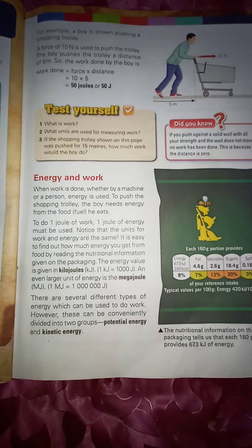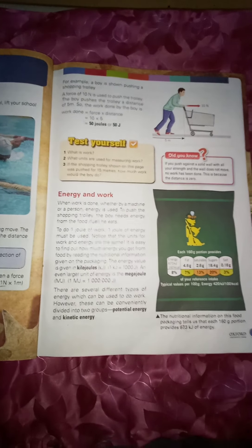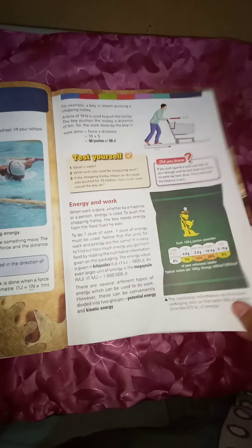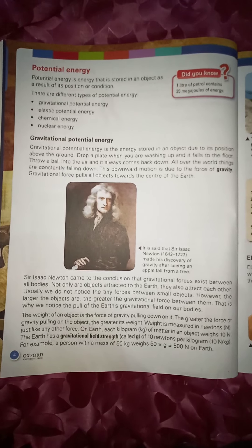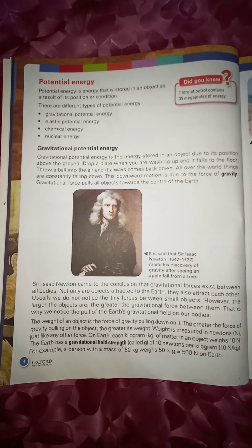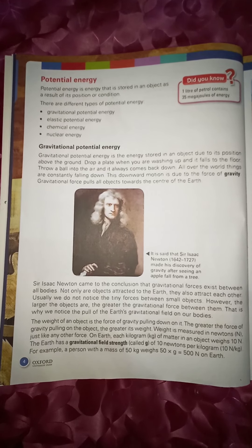There are several different types of energies, but we conveniently divide them into two groups: potential energy and kinetic energy. Potential energy is the energy that is stored in an object as a result of its position and condition.